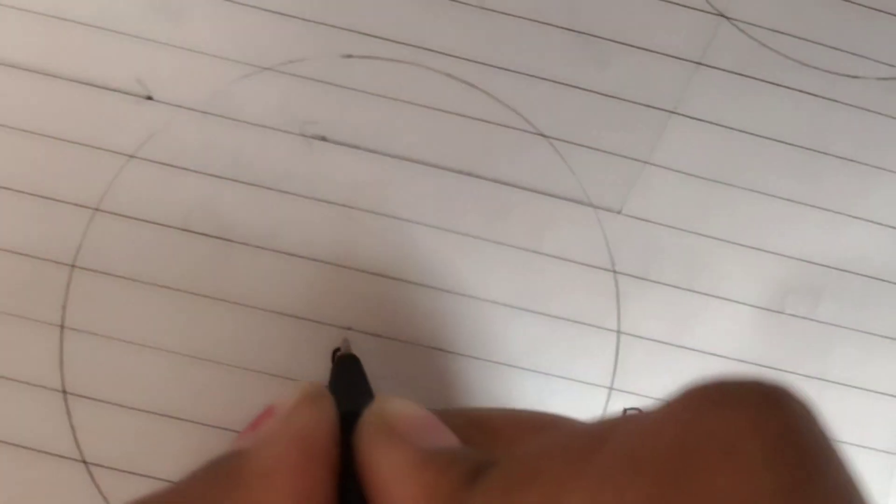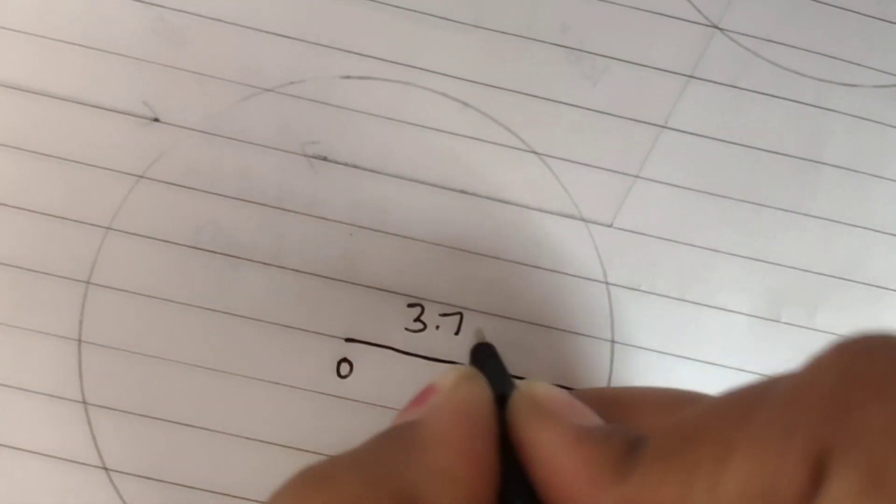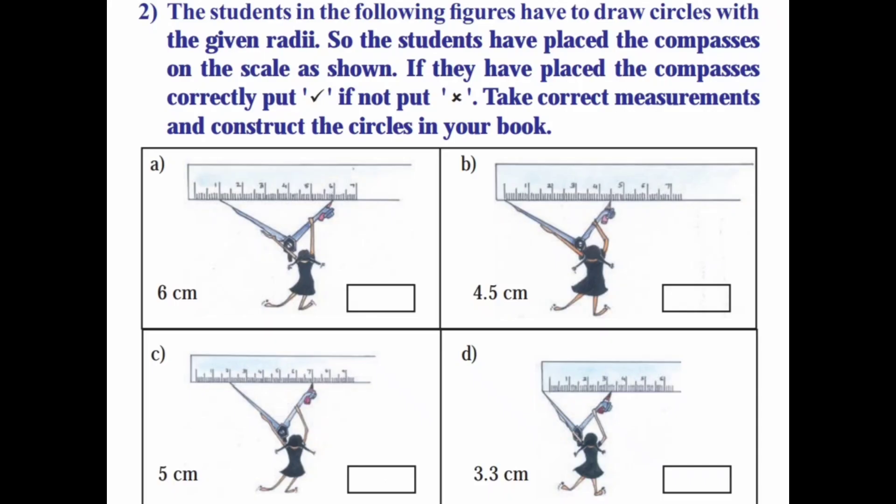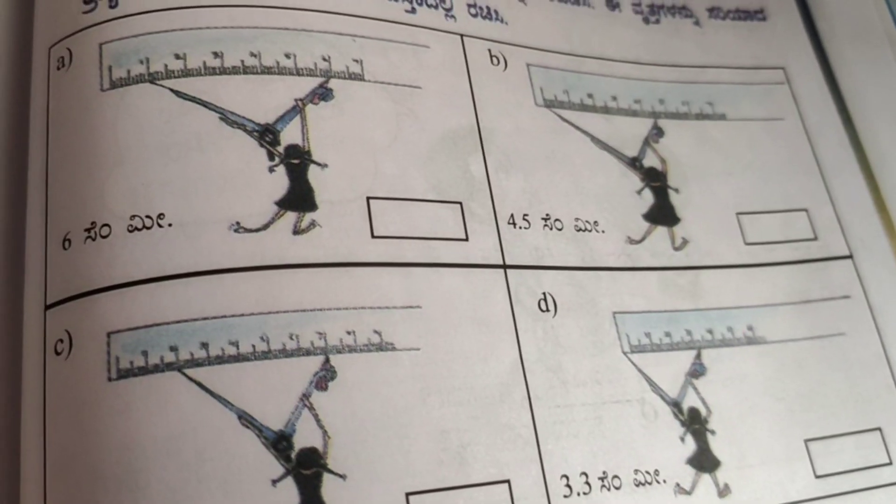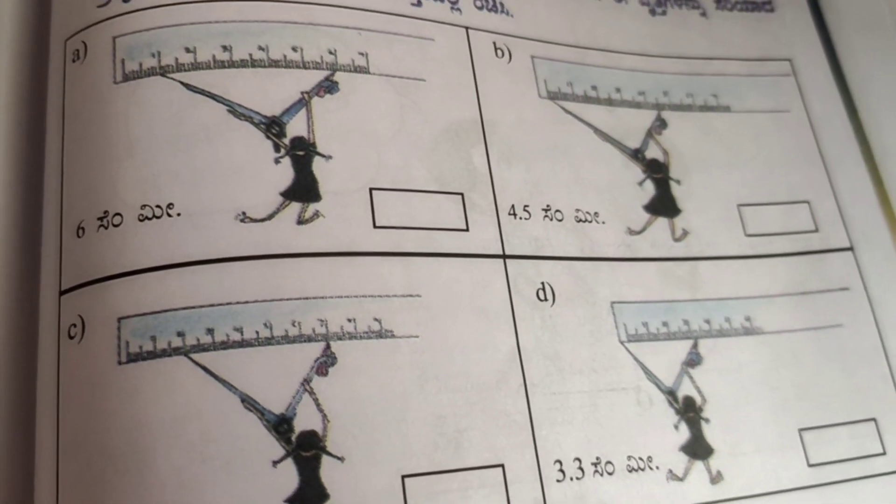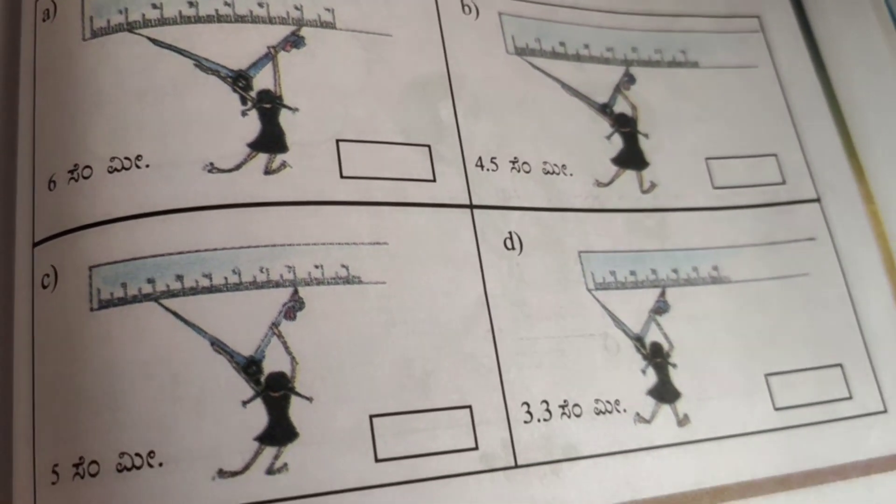Last one 3.7. Correct, 3.7 I will draw the circle. I will change the center position. Okay, second question.